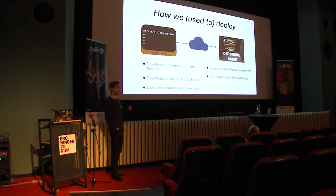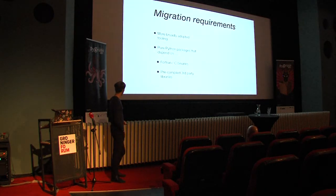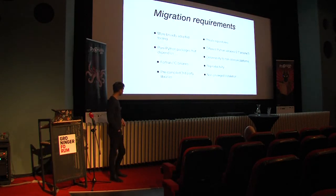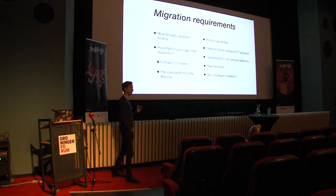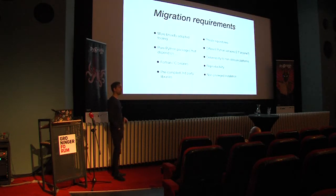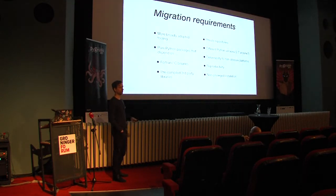So I thought it would be a good idea to migrate to something more modern. Our requirements: we'd like more broadly adopted tooling so people don't have to ask us; we need to package Python, C, and third-party libraries; we'd like private repositories because not all the code we deploy is open source; we still need to support Python 2 for now; it has to be reproducible — you always need to get the same list of sources from the same raw frames; and a lot of our users are non-sudo users, so we have to install as non-root.